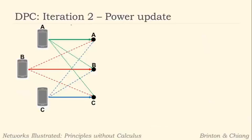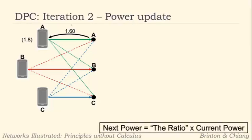So now we'll move on to the second iteration and we'll update the power levels using the SIRs that we just computed. A would feedback the value of 1.6 to transmitter A, which has a desired SIR of 1.8. And remember our equation is the next power is equal to the ratio times the current power.